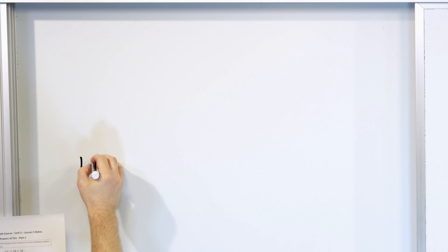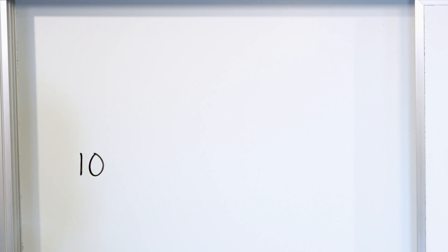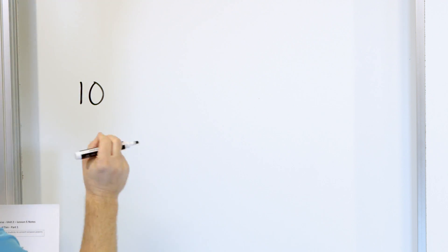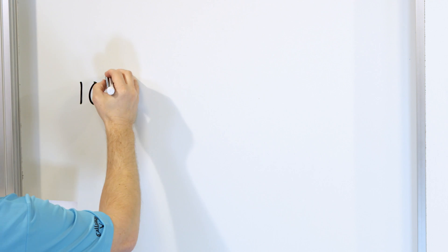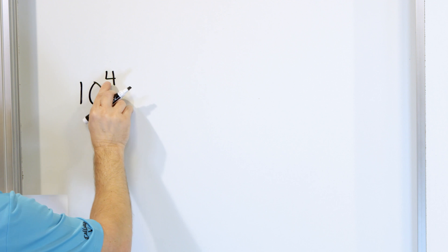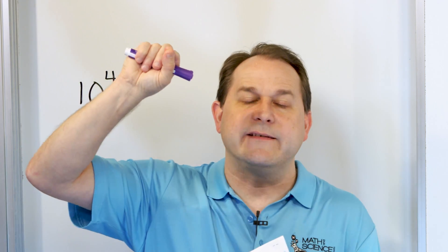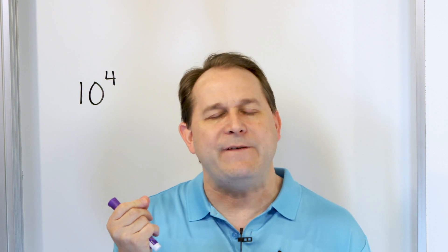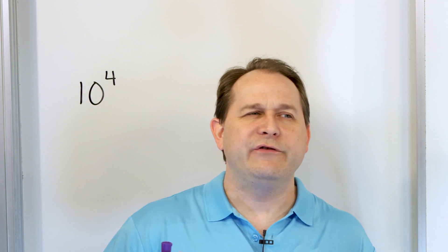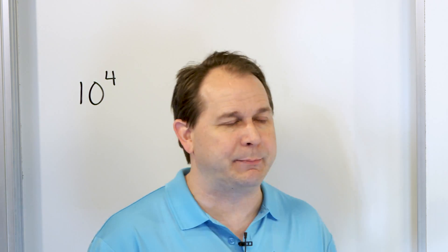Let's talk about this idea of an exponent. If I have the number ten and we apply exponents to it — in other words, powers of ten — if we take the number ten and raise it to an exponent, which is the number four, what does this actually mean? An exponent is when you have the little number raised up above. It's just a faster way of multiplying something.